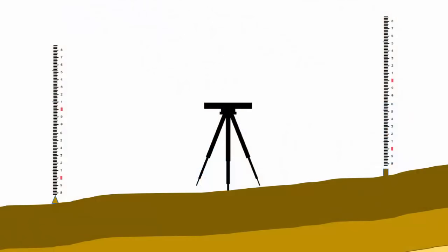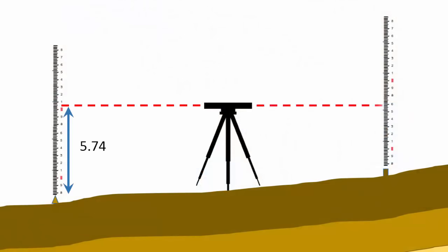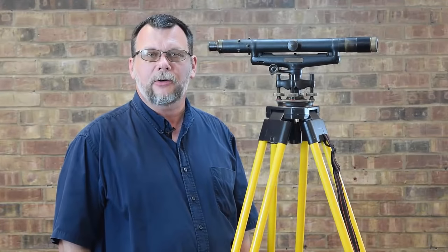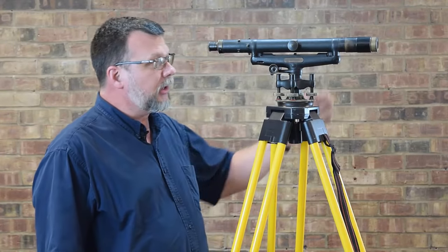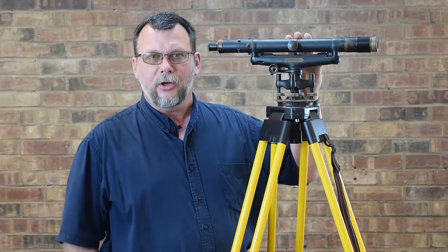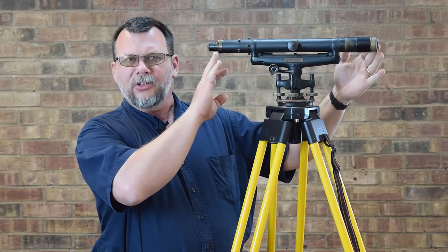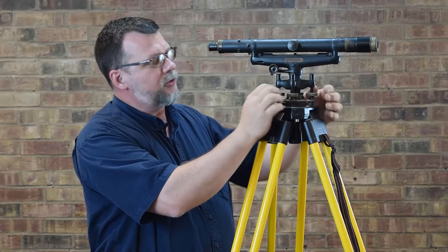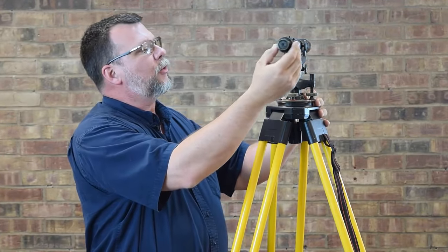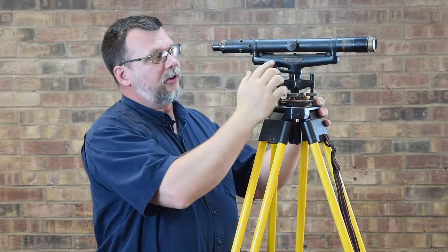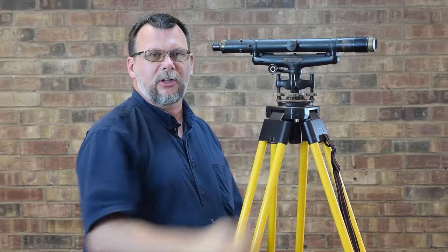The difference in two rod readings taken from the same instrument location equals the elevation difference. Here are some examples of optical levels. This dumpy level was made around 1915. Notice how long the telescope is. Using the four adjusting screws in the instrument base, a surveyor would level the instrument in two directions, centering the bubble in its cylindrical tube.